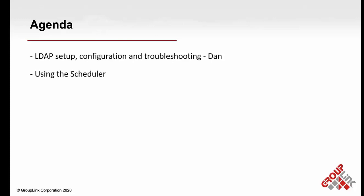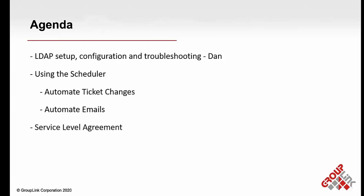Then we will go over using the scheduler — how you can automate ticket changes and automate emails — and then go to the service level agreement and the asset configuration. Just keep in mind that everything we go over today, we do have a written step-by-step instruction that we will go ahead and email out to you, so you can watch us do it here and then implement it in your help desk.